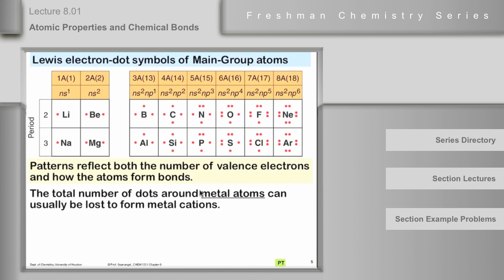The total number of dots around metal atoms can usually be lost to form metal cations. We saw last week some examples of exceptions to that, like tin. Tin is a metal, but it's too far from any noble gas to completely lose all its electrons or to gain new electrons. So this, I'll say usually here.